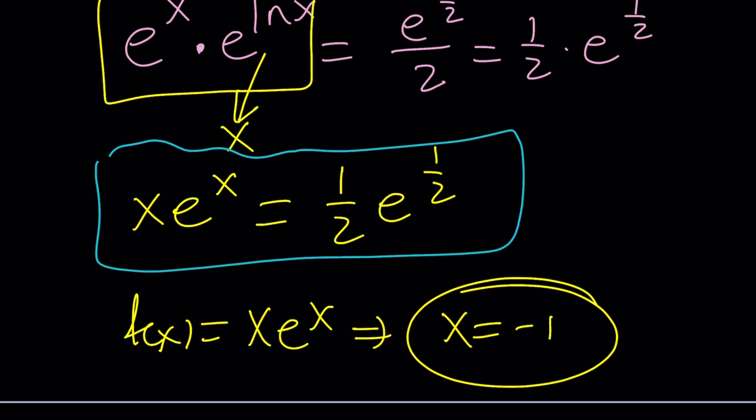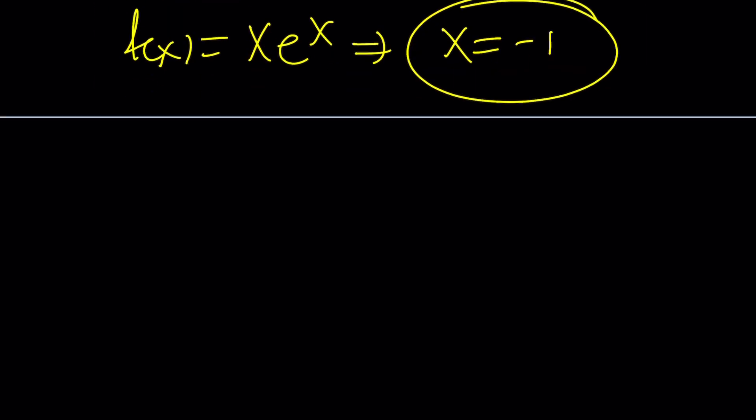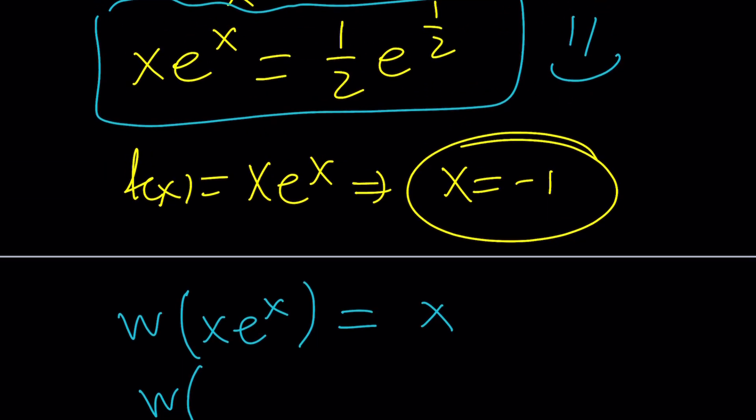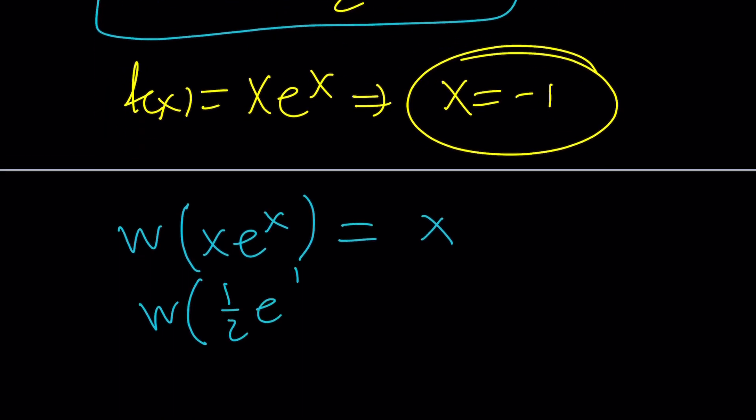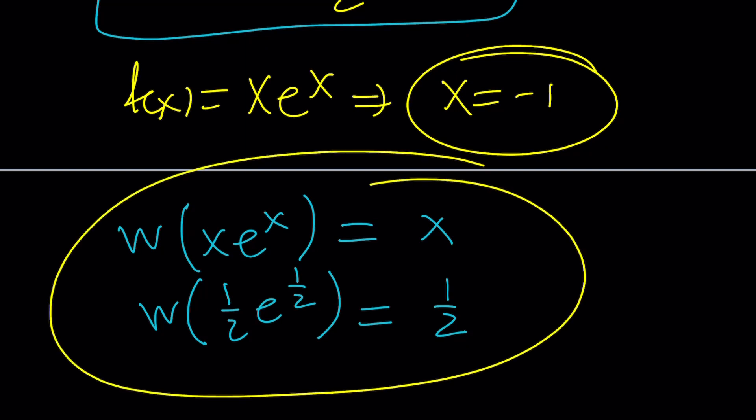Yes that's what it is. We're going to Lambert both sides or W both sides and by definition if you W x e to the x you get x. If your input is one half e to the power one half that's just going to be one half. It's the inverse function for x e to the x. Therefore the solution is x equals one half. Why is that the only solution? Let's take a look at the graph.